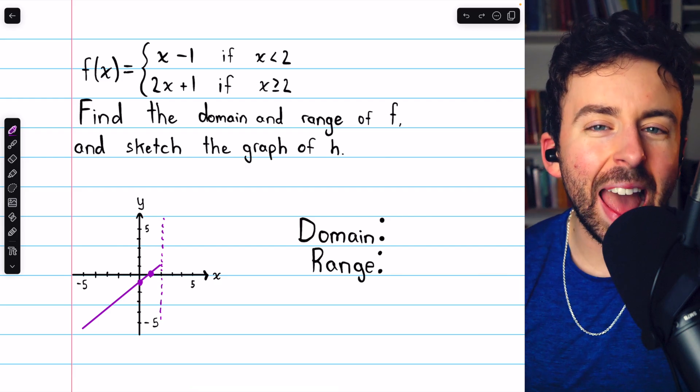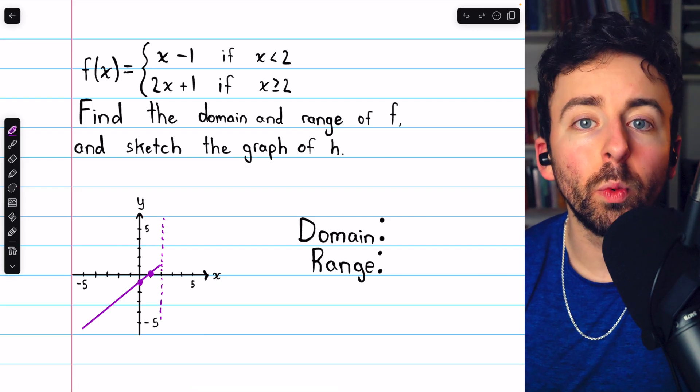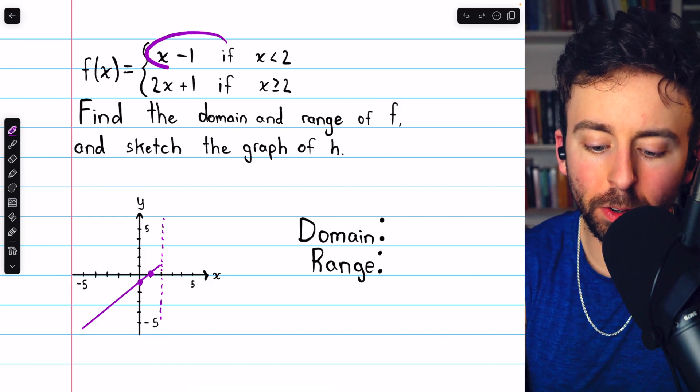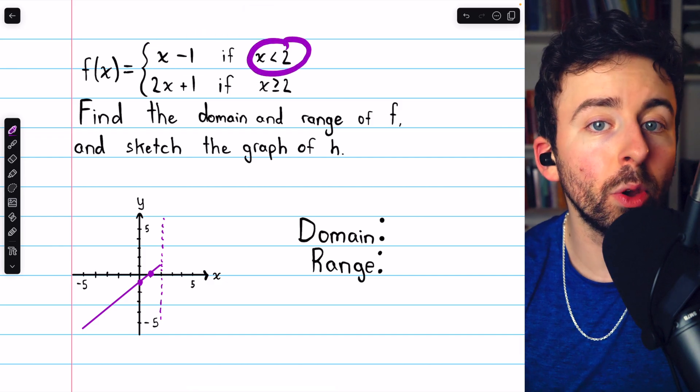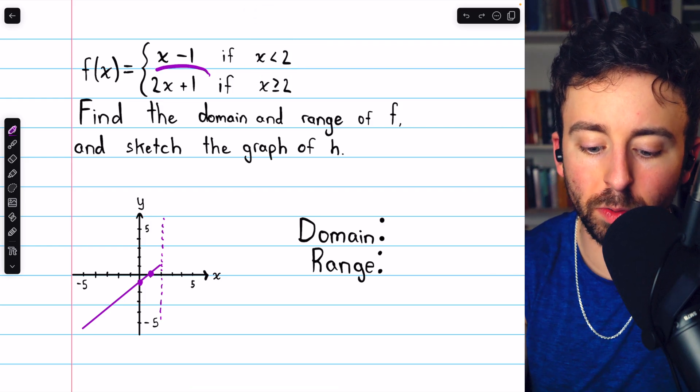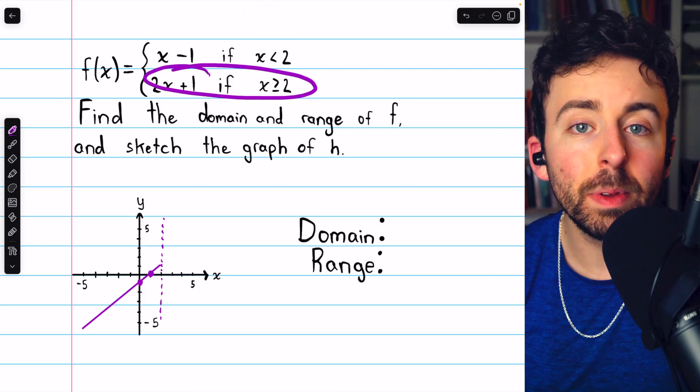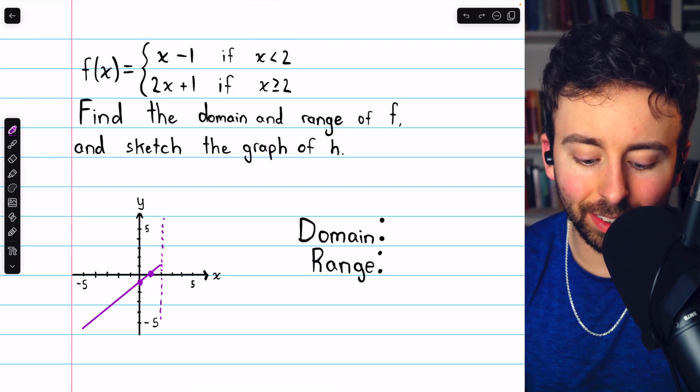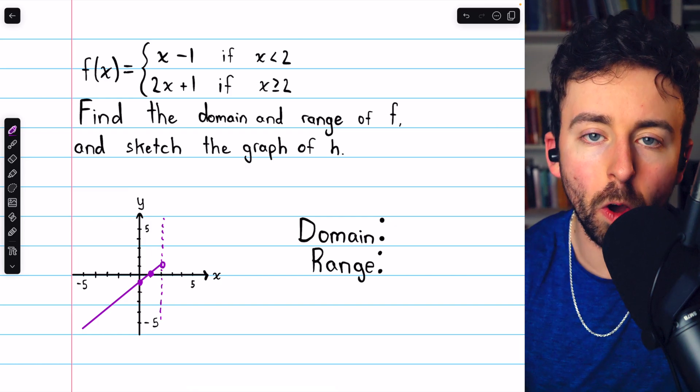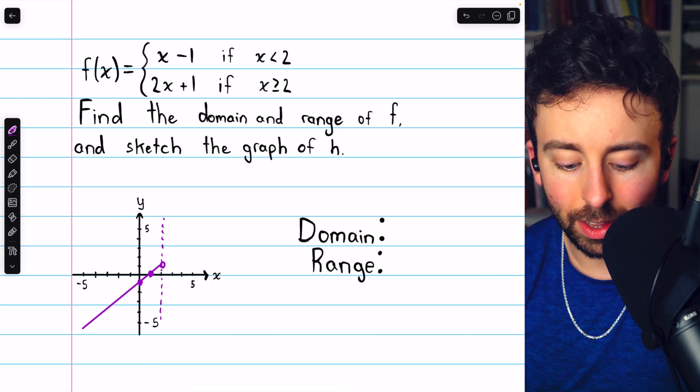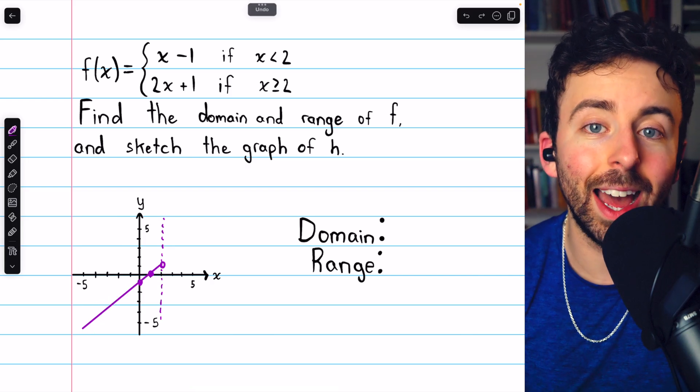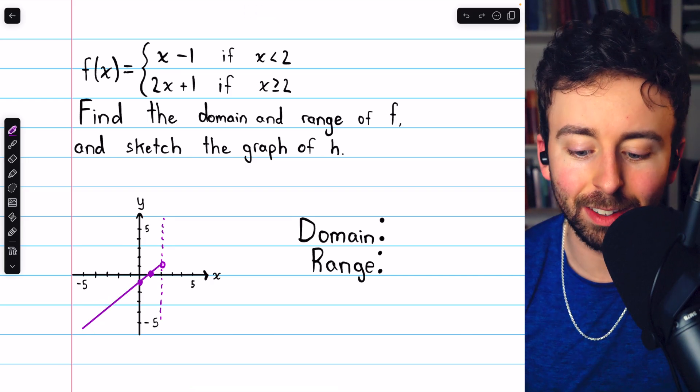Now, what about at x equals 2? What is the behavior of the function? Well, this first part says x has to be strictly less than 2. So at x equals 2, the behavior of the function actually switches. Because of that, at the end of this line, we should draw a little open circle. So we know that at x equals 2, this line is actually not applying anymore. A different line is applying.